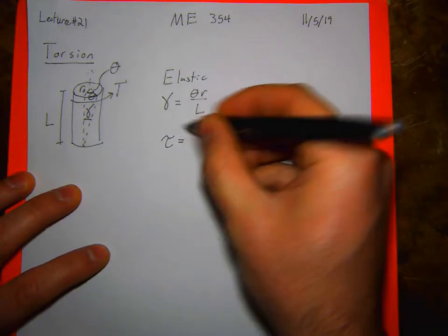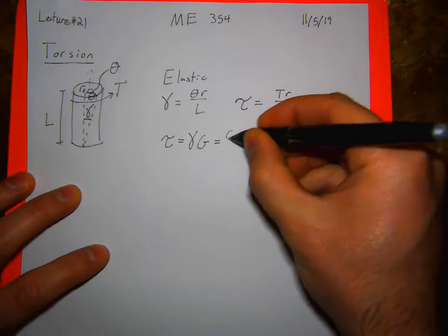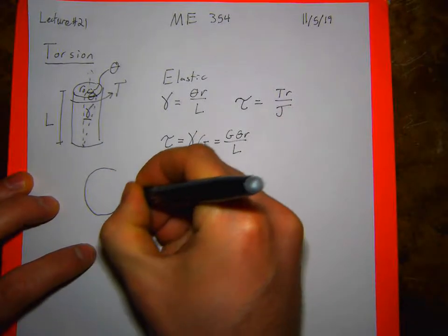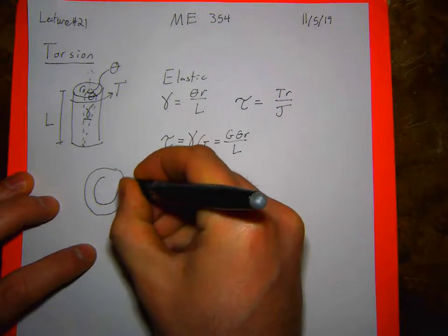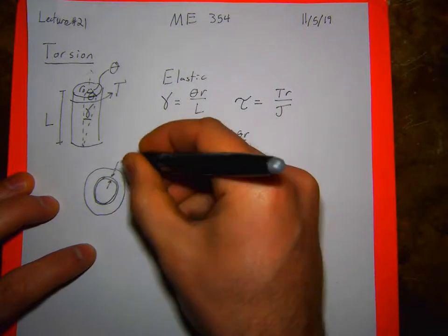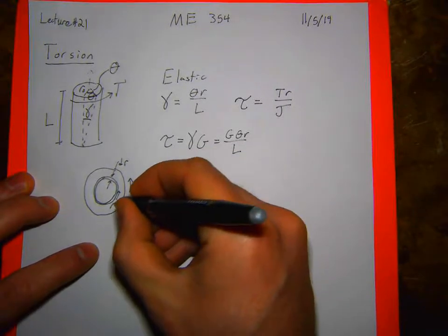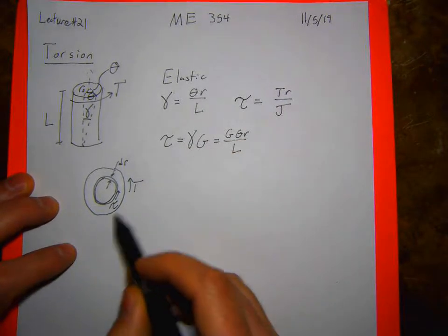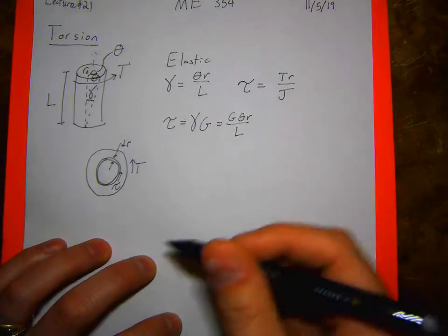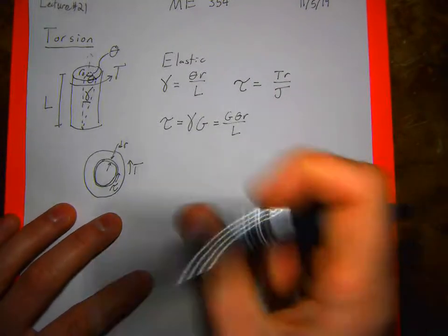Torque is also related to shear stress as G theta r over L. We got that by looking at our cross section, drawing an infinitesimal ring of some thickness dr, and integrating the shear and the torque to relate shear to torque. Today we're getting to what happens when this bar starts deforming plastically, which is what you'll be doing in this lab, and I'll go through an example for that.